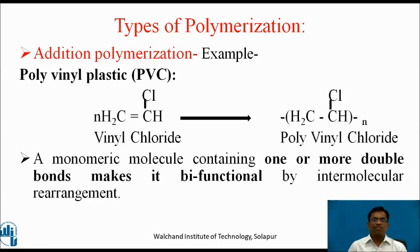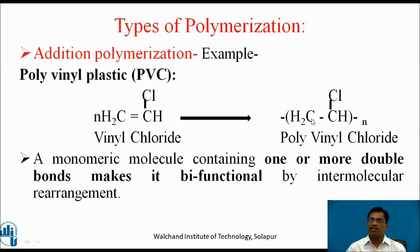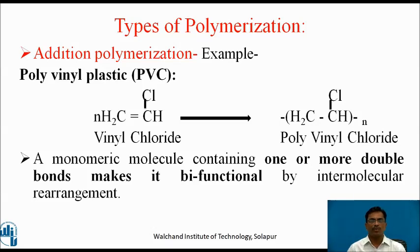Second example of addition polymerization: polyvinyl chloride (PVC). Vinyl chloride contains a double bond — the pi bond is the reaction site. The pi bond breaks open and bond formation occurs between two different vinyl chloride molecules, continuing to form polyvinyl chloride. A monomeric molecule containing one or more double bonds makes it bifunctional by intermolecular rearrangement.